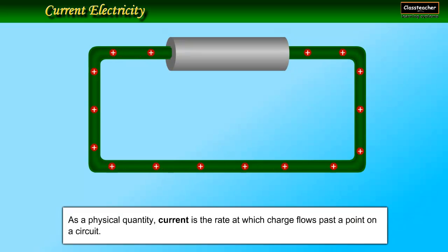Electric current, as a physical quantity, is the rate at which charge flows past a point on a circuit.